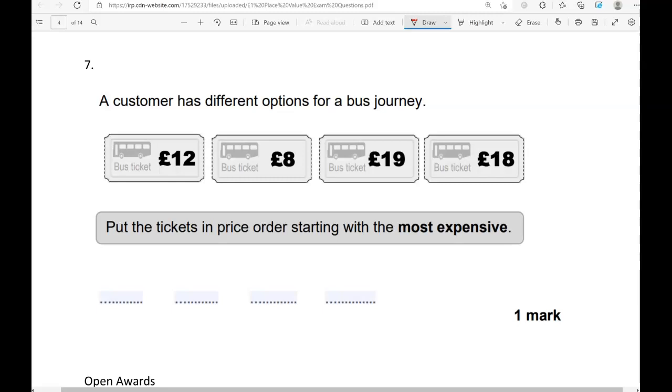A customer has different options for a bus journey. We've got £12, £8, £19 and £18. Put the tickets in price order starting with the most expensive. So we're going to start with the highest. If you look at these numbers, 8 is below 10, the rest of them are above 10. So 8 is the cheapest, that's going to be the last one.